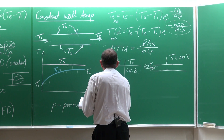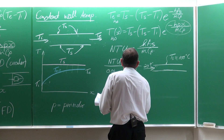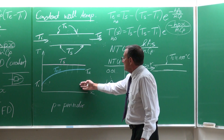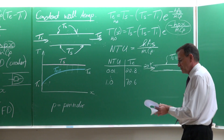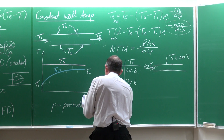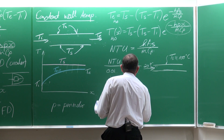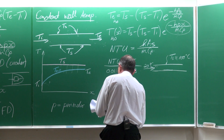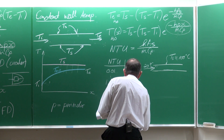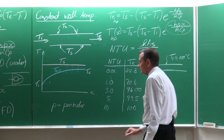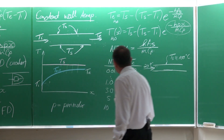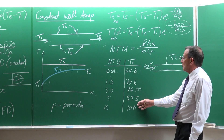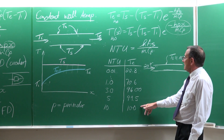So if you want heat transfer and the NTUs are low, you're going to get very little heat transfer and your heat exchanger is not going to be effective. If the NTUs become 1, the outlet temperature increases to 70.6 — a 50 degree rise. If it becomes 3, the temperature is 96. If it is 5, it is 99.5. And if it is 10, it is 100 degrees.